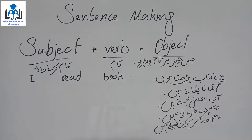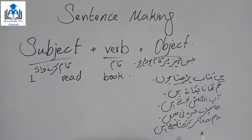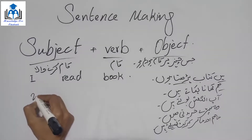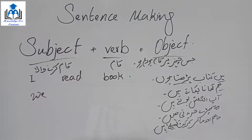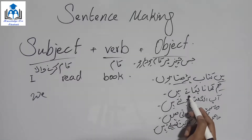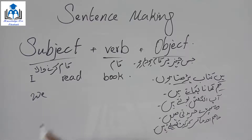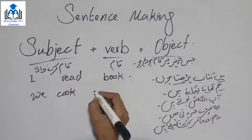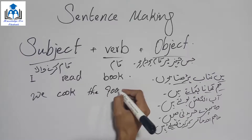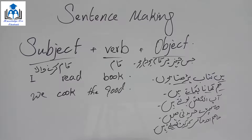Next statement: 'ہم کھانا پکاتے ہیں' (We cook food). Who does this? 'ہم' = 'we'. What do we do? 'پکاتے' = 'cook'. What do we cook? 'کھانا' = 'the food'. So: we cook the food. Your statement is complete — 'ہم کھانا پکاتے ہیں' in English is → We cook the food.